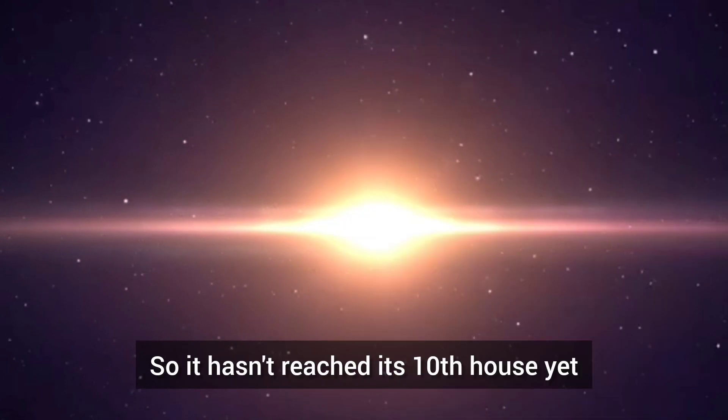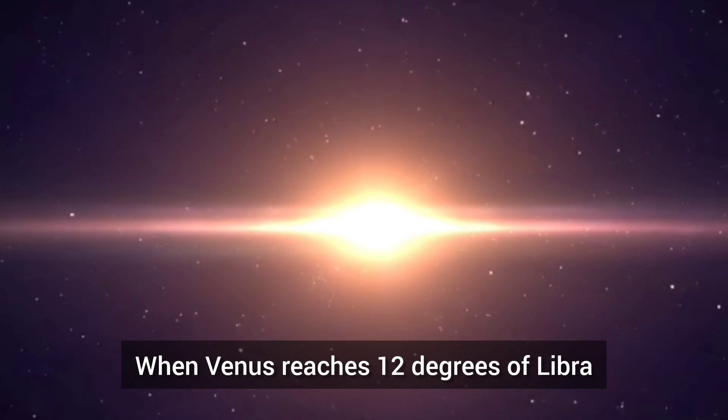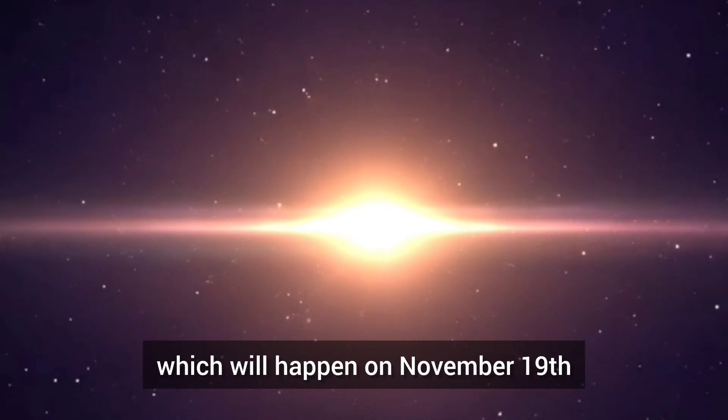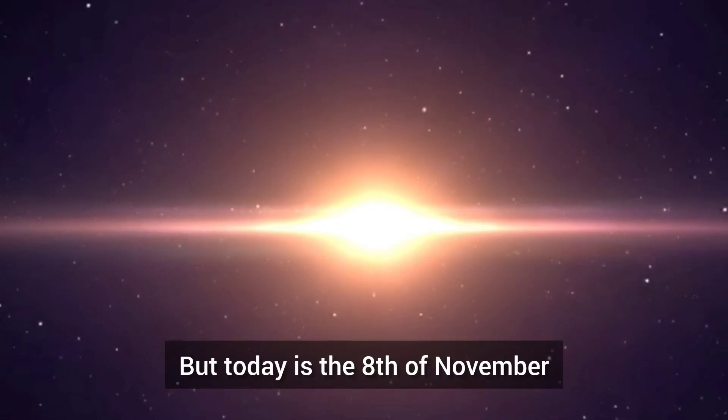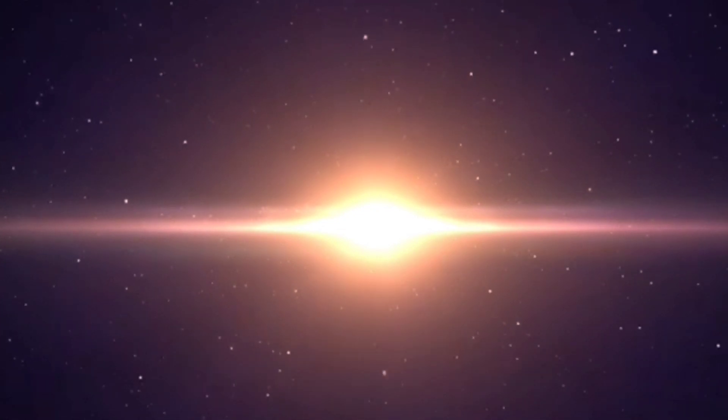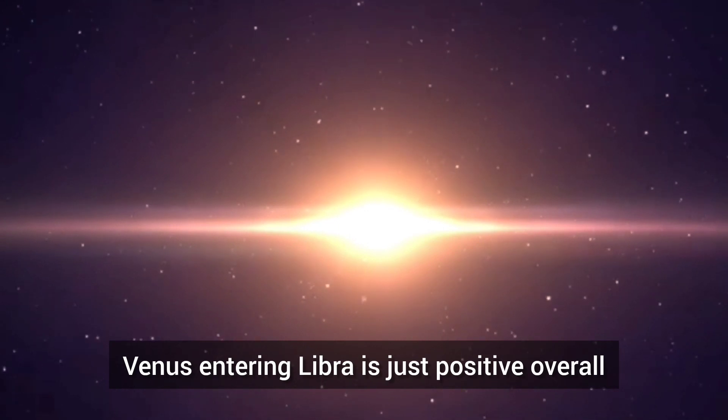So it hasn't reached its 10th house yet. When Venus reaches 12 degrees of Libra, which will happen on November 19th, that will be a very good day for crypto. But today is the 8th of November. Venus entering Libra is just positive overall.